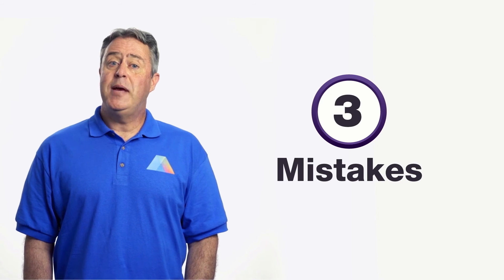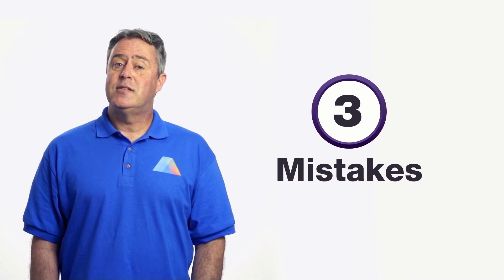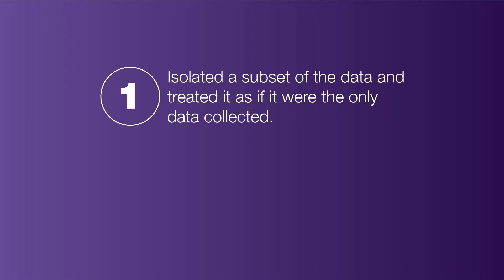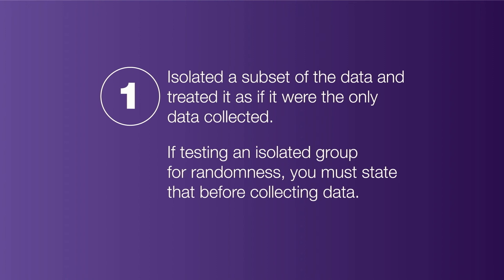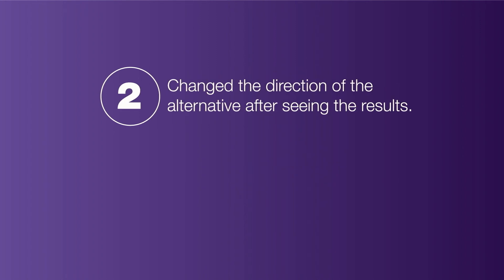However, three mistakes were made in this analysis. First, we isolated a subset of the data based on the results and treated it as if it were the only data we collected. If we want to test only balls number 47 and 48 for randomness, we need to state that before collecting data. Second, we changed the direction of the alternative hypothesis after seeing the results.